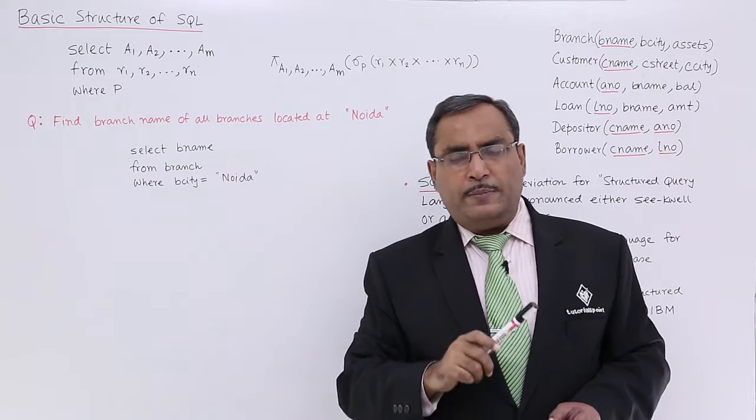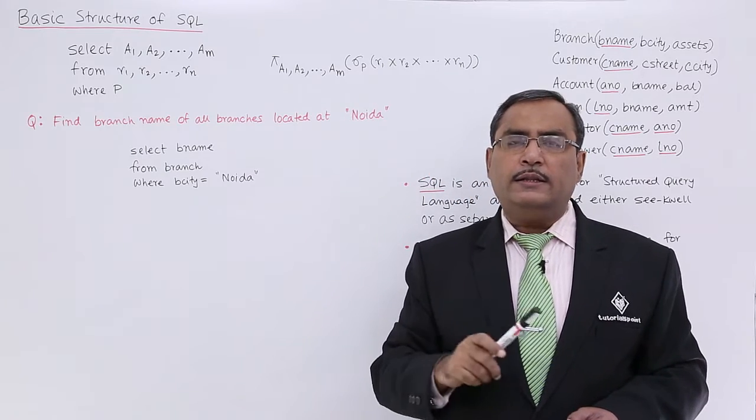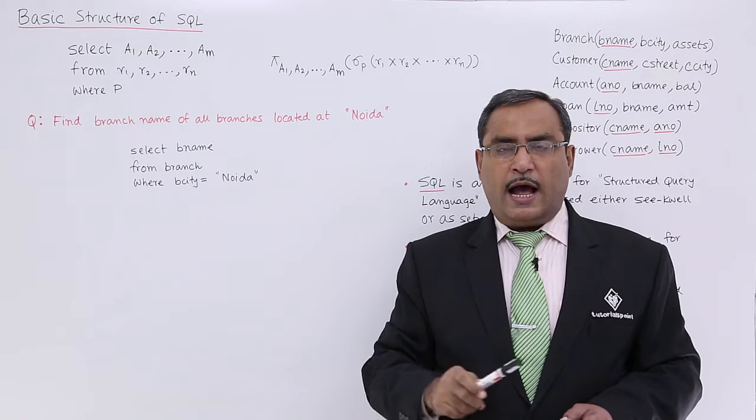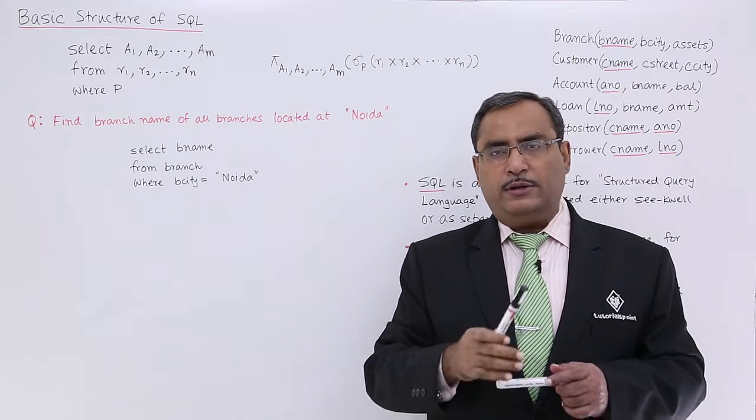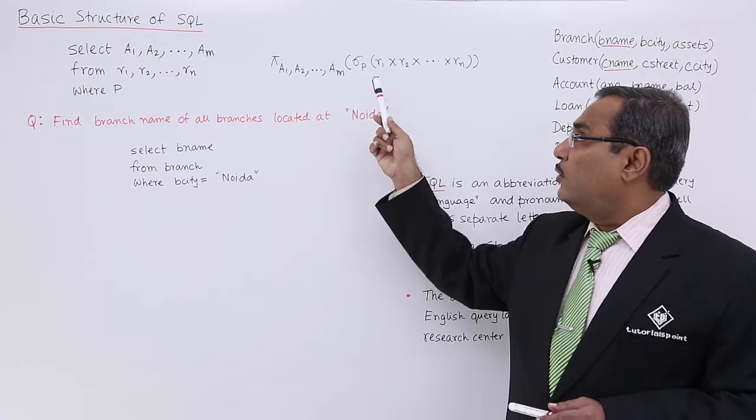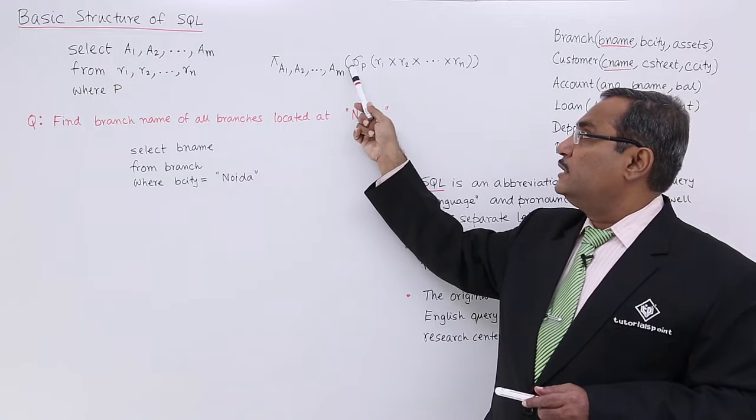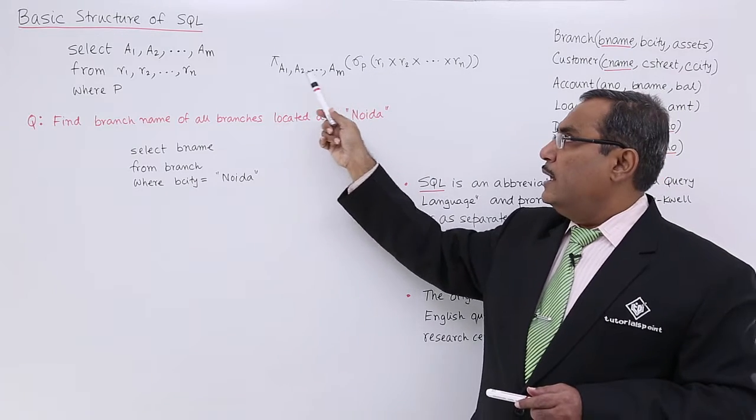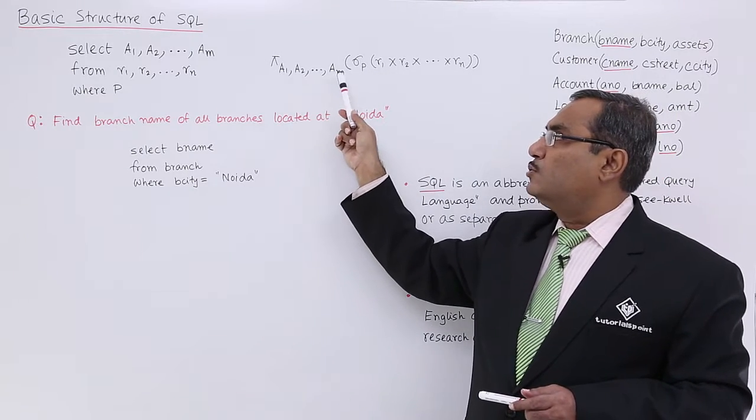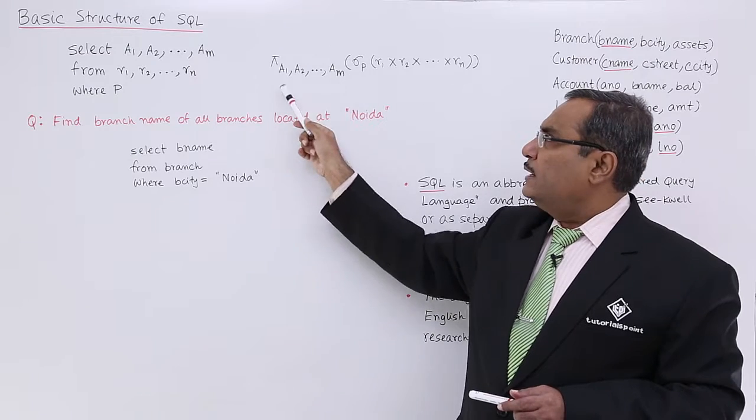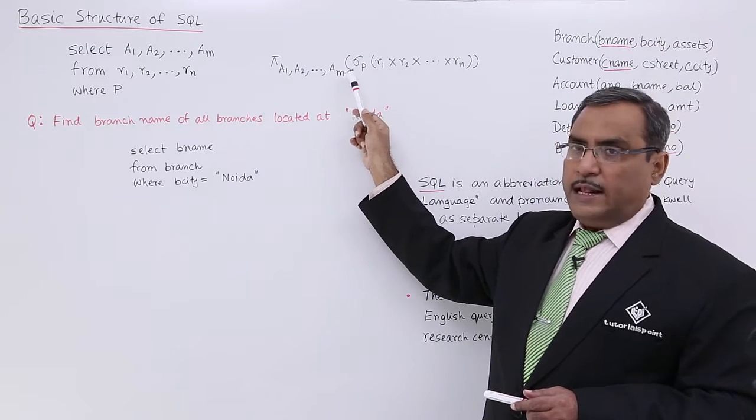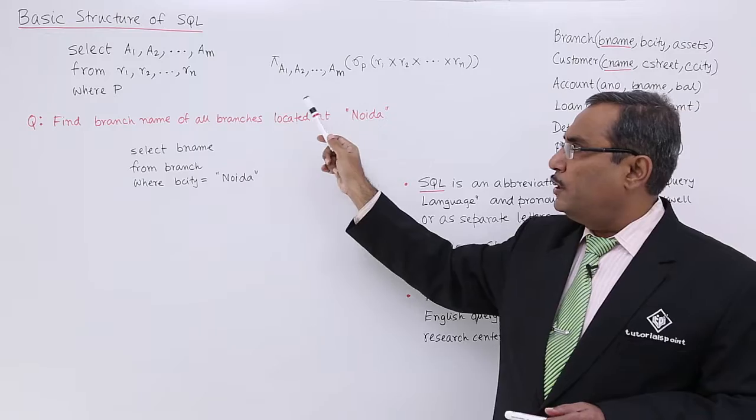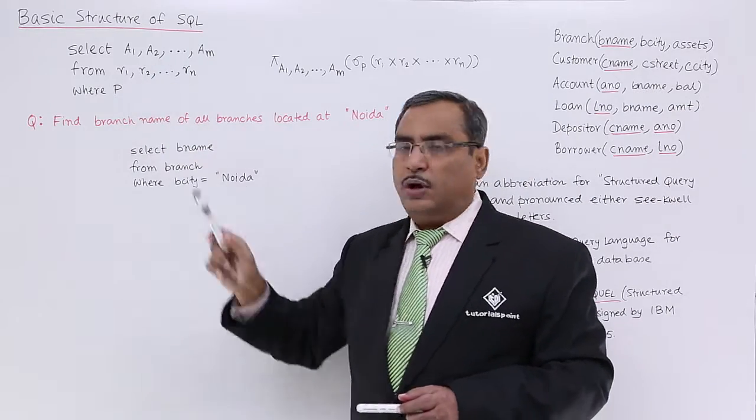Where it is working on R1 × R2 × dot dot dot × Rn. That means here will be having R1, R2 dot dot dot Rn, then nothing but the respective relations, and this relation will be obtained by doing the Cartesian product, and on that particular relation this σ P will be working, and that will be π A1 to Am.